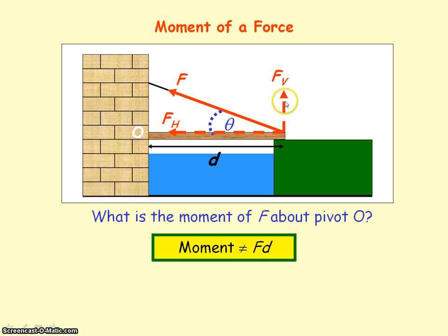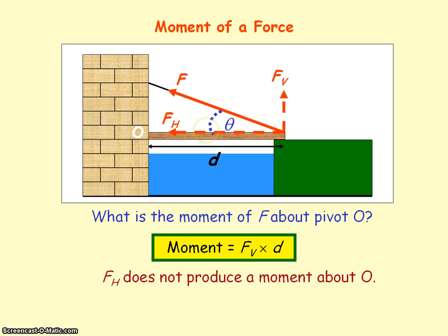It's the vertical component that will produce the moment about the pivot point. So the moment will be given by the vertical component of the force multiplied by distance D, as D is the perpendicular distance of the vertical component from the pivot point. The horizontal component of F does not produce a moment about the pivot point, because its line of action is passing through the pivot point, so the perpendicular distance of this force from the pivot point is zero.